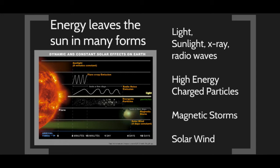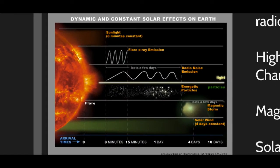There are many forms of energy the Earth gets from the Sun: sunlight, X-rays, and radio waves are all forms of light. The sunlight from the photosphere takes about 8.2 minutes to reach Earth. Solar flares produce high-energy X-rays that also take eight minutes. Radio noise from gases in the chromosphere and corona also travels at the speed of light, taking eight minutes to reach us.